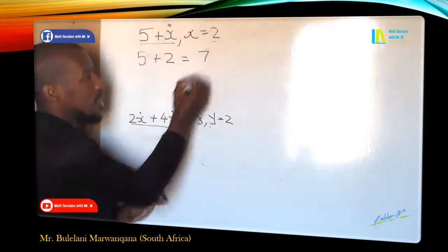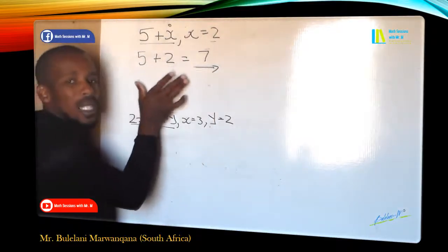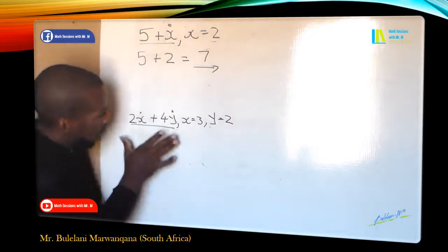Now which is 5 plus 2 gives us a total solution of 7. So that is evaluating one variable.